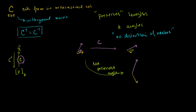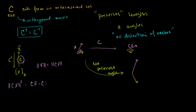Let's actually prove this to ourselves. Let's say this pink vector is x, and this pink vector after transformation is Cx. I'm claiming that the length of x is equal to the length of Cx. Let's see if that's actually the case.